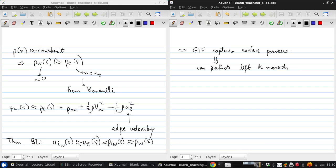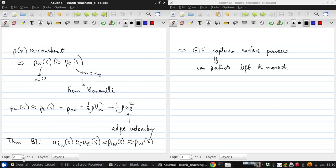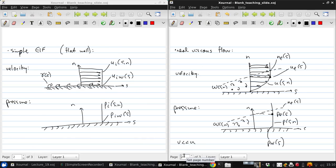Now, if we compare the sketches of the real flow and the simple EIF, we can see that the major difference is that the EIF does not take into account the displacement effect of the slow fluid in the boundary layer.